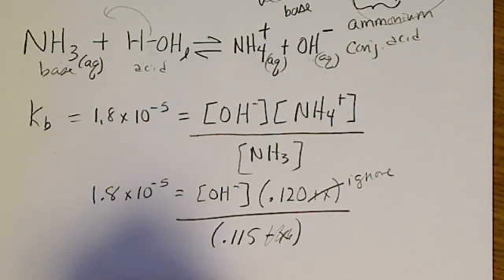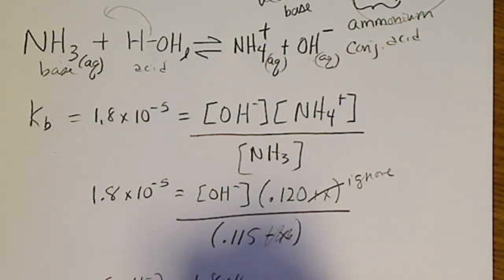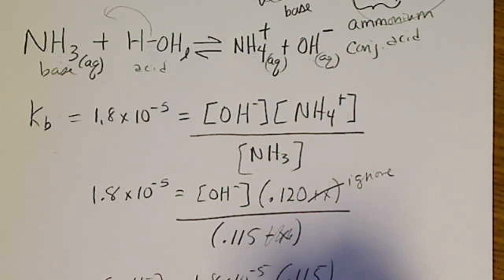So we're going to solve for OH minus. So that's 1.8 times 10 to the minus 5th times 0.115 divided by 0.120.